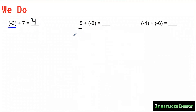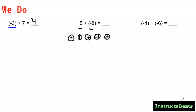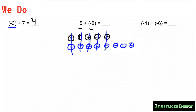Now let's start with a positive five. I have five positive charges and I'm going to add eight negative charges to that. Now I can see that I can make one, two, three, four, five zero pairs — those cancel each other out — and I'm left over with negative three. So five plus negative eight would leave you with negative three.